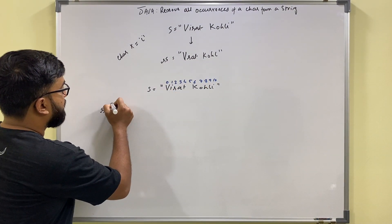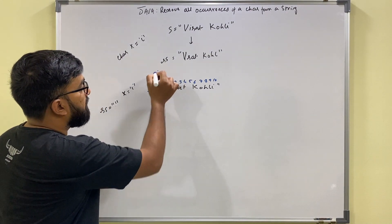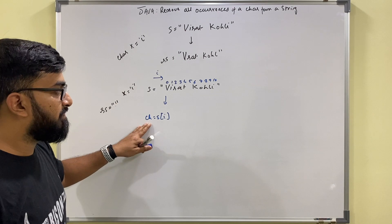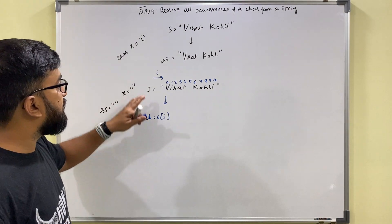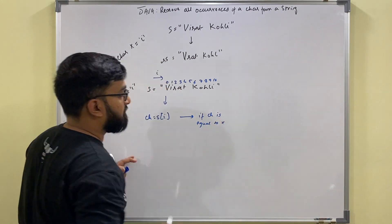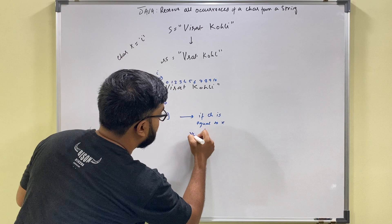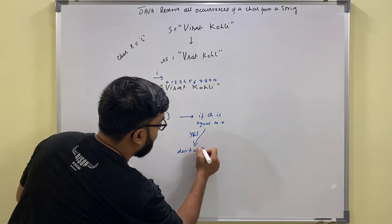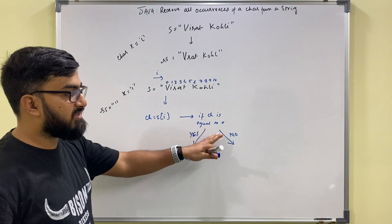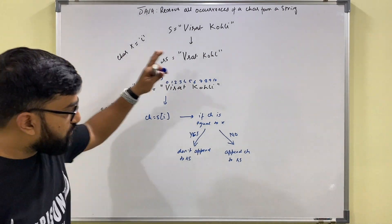The result string RS starts with a blank string. We iterate from left to right, indices 0 to 10. In each iteration, we pick up the i-th character stored in variable ch. We check if ch is equal to x — that is, if ch is the character we need to remove. If ch equals x, we don't append it to RS. If ch is not equal to x, we append ch to RS.